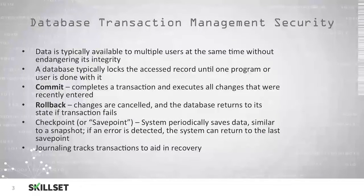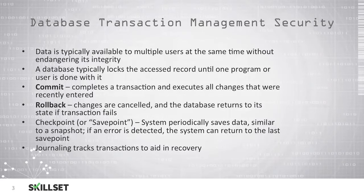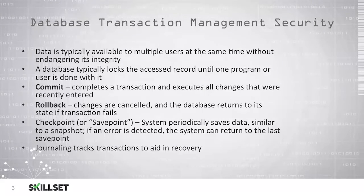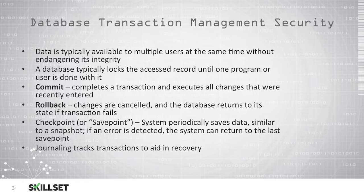A rollback is when changes are cancelled and the database returns to the state previous to the transaction if that transaction fails. A checkpoint, or a save point, is where the system periodically saves data, similar to a snapshot. If an error is detected, the system can automatically return to the last good save point.